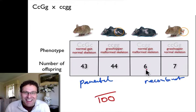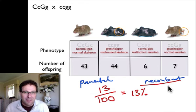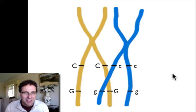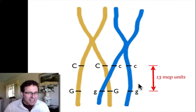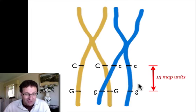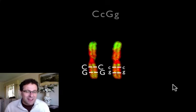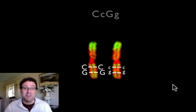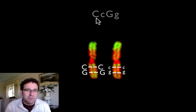If you add these numbers up, they add up to 100 offspring, and 6 plus 7 is 13 — 13 out of 100, or 13 percent of the offspring are recombinant. What that tells us, going back to this chromosome, is that if 13% of the offspring are recombinant, the two genes are 13 map units apart. Map units is a measure of recombination frequency, and it works out to be roughly 13 million bases of DNA apart. The further apart they are, the more recombination is going to happen.